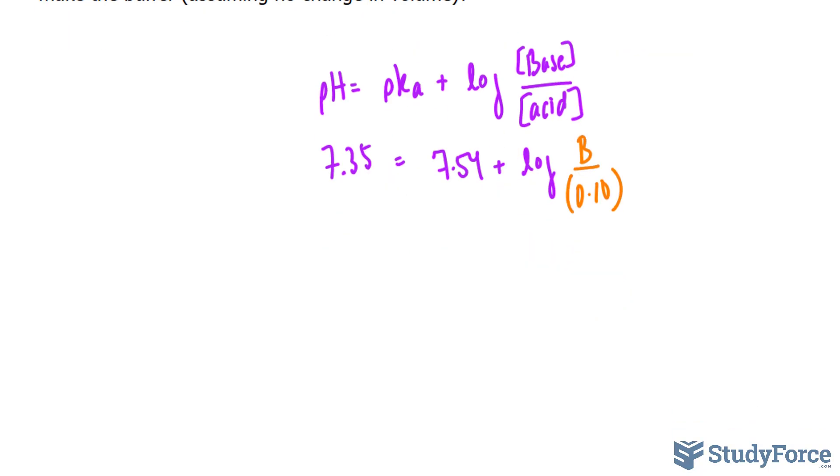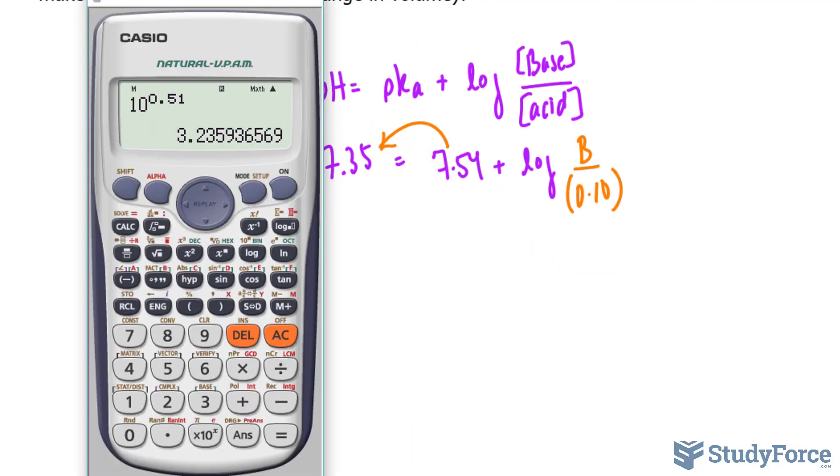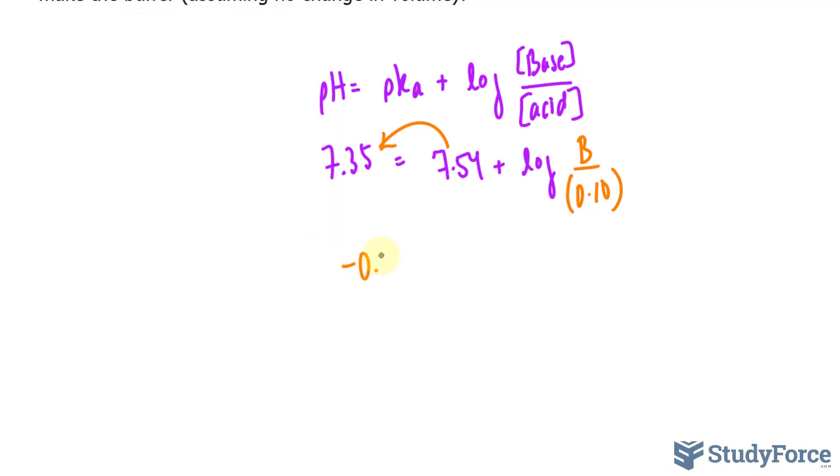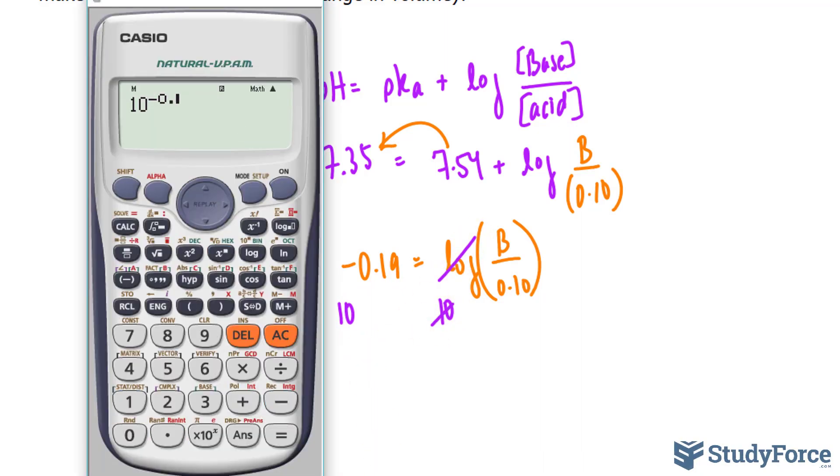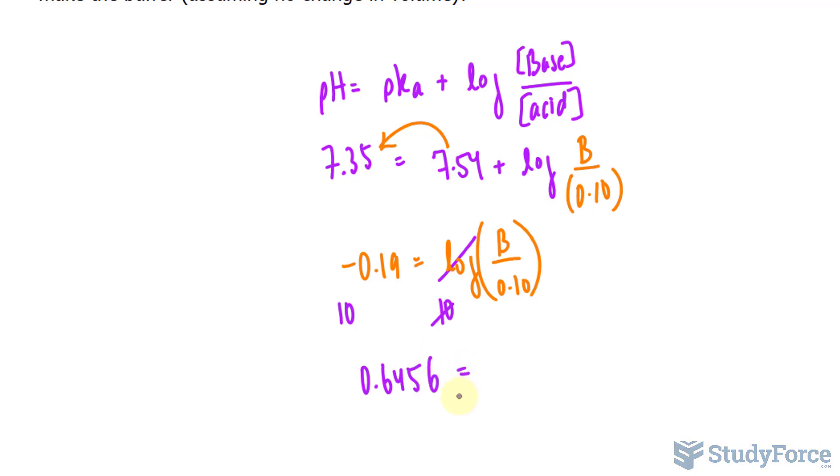Leaving us only with the base that's unknown, its concentration. Now let's go ahead and solve for B using the same technique as before. I'll take this over, find their difference. 7.35 minus 7.54 gives us a negative number, negative 0.19 is equal to log of B over 0.10. Raising both sides as powers to the base 10. That cancels out. 10 raised to the power of negative 0.19. We need this number to two significant figures after the decimal place. So I'll write down 0.645, I'll leave a few numbers, is equal to, and I'll round at the very end. B over 0.10.